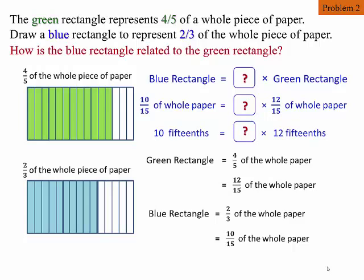In other words, 10/15 is what fraction of 12/15? How can you determine that? What fraction can you multiply with 12 to get 10? We can multiply 10/12. That means 10/15 of the whole paper actually equals 10/12 times 12/15 of the whole paper.